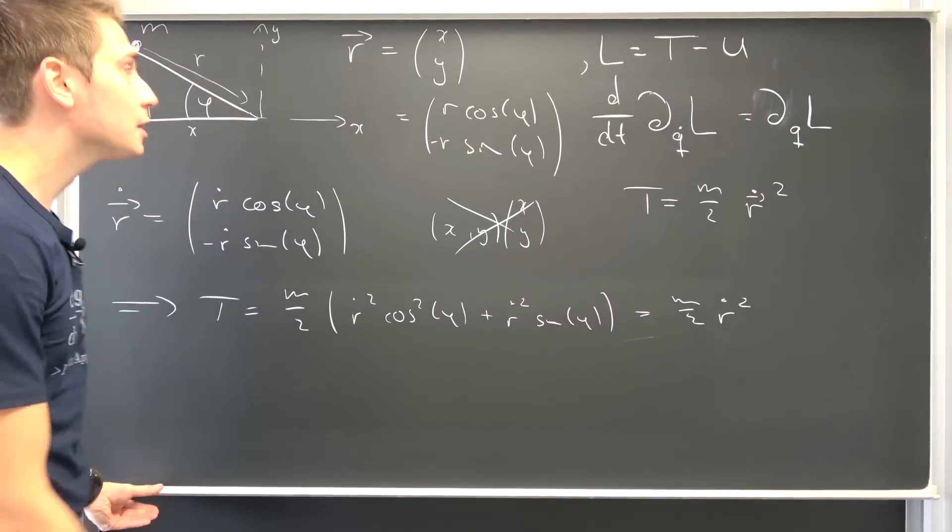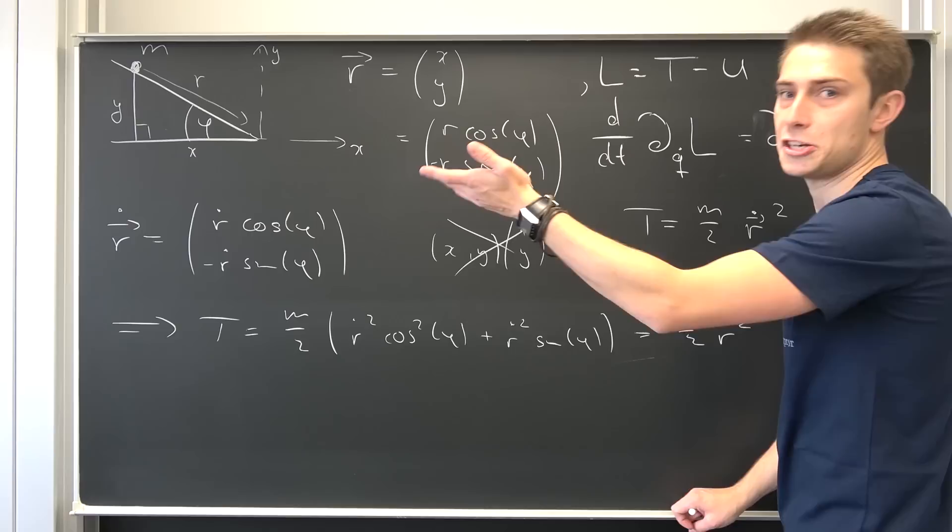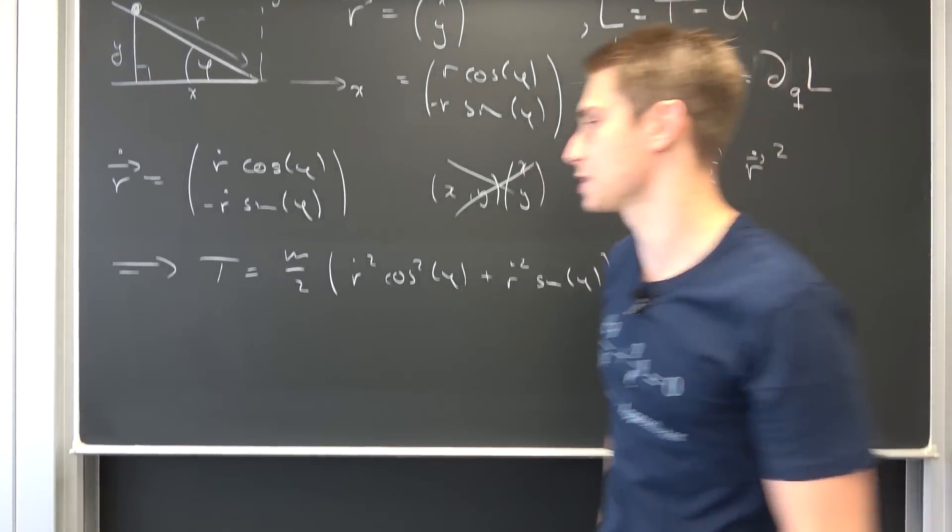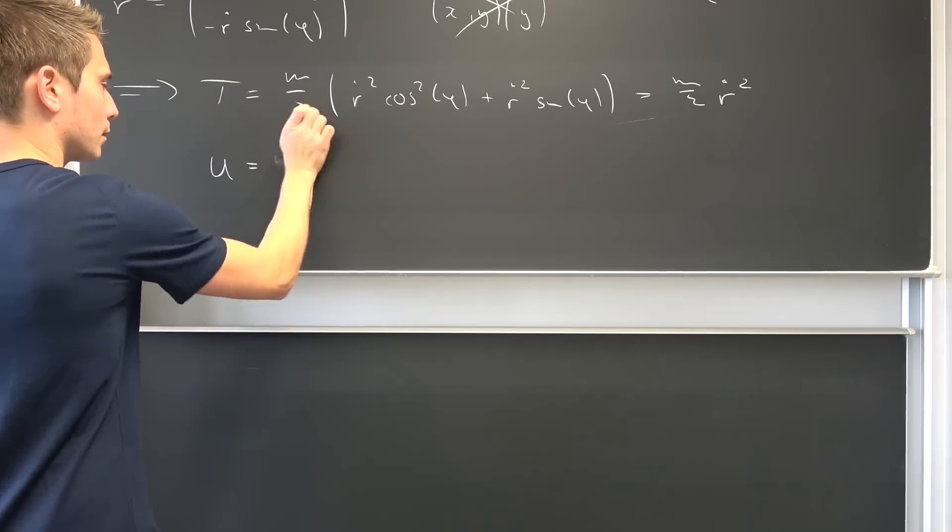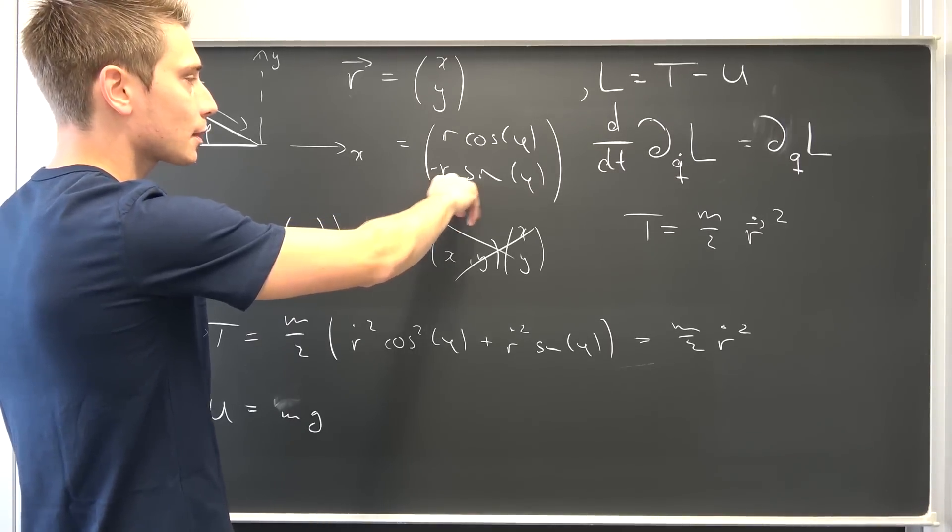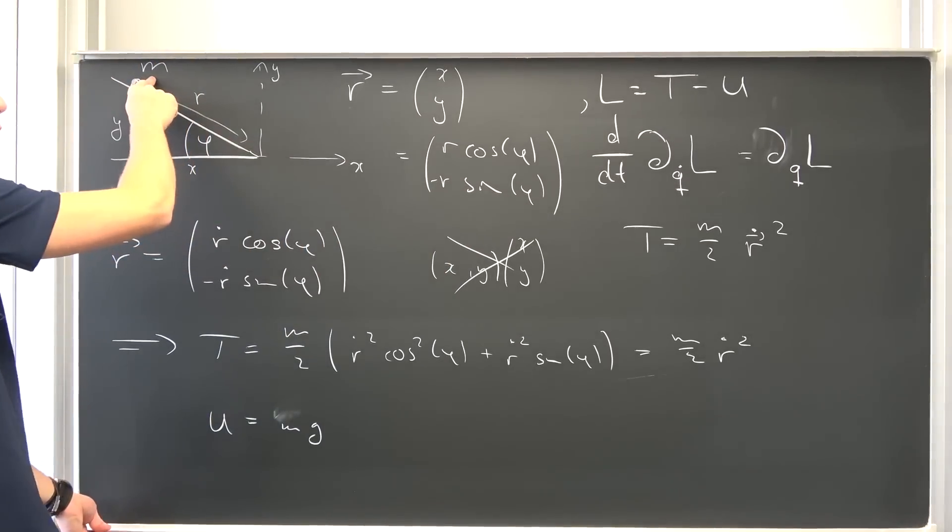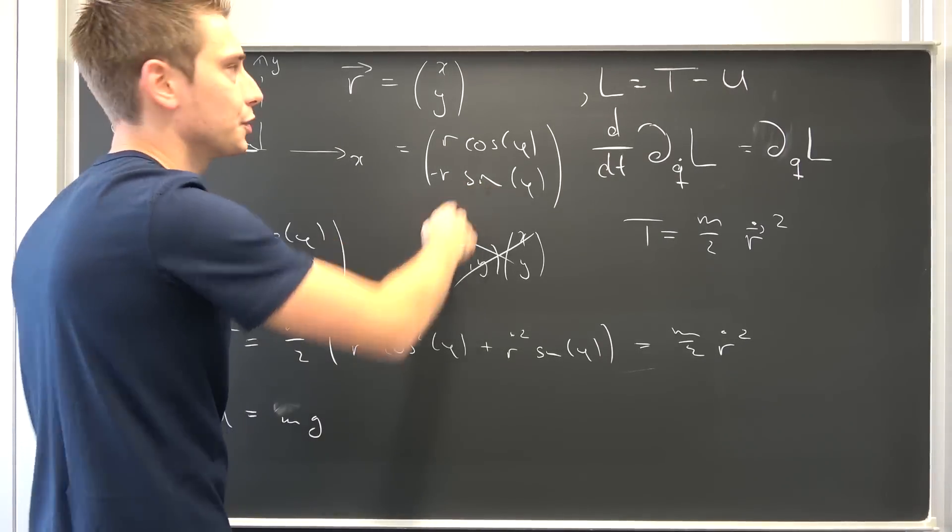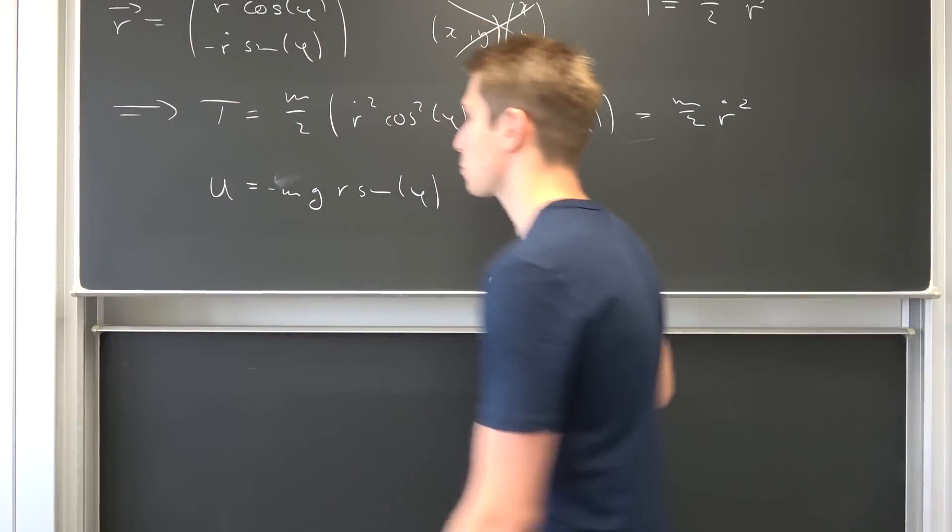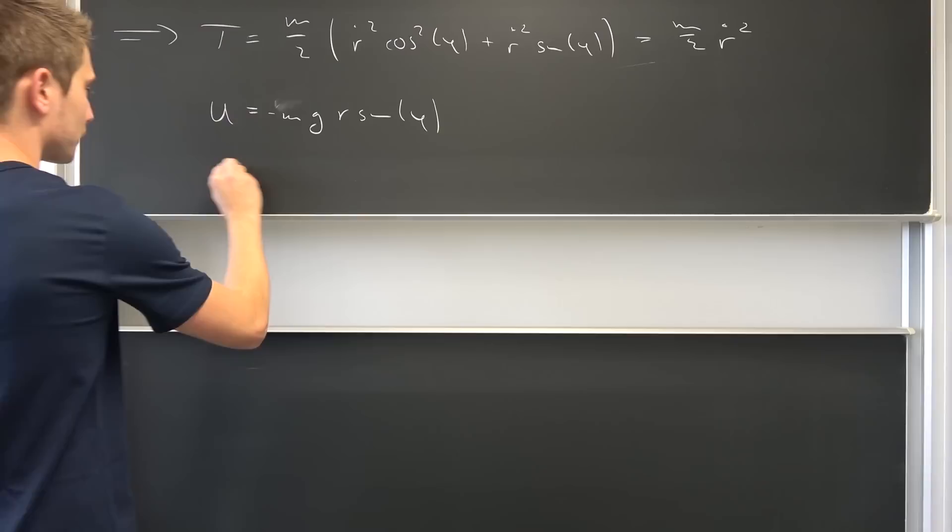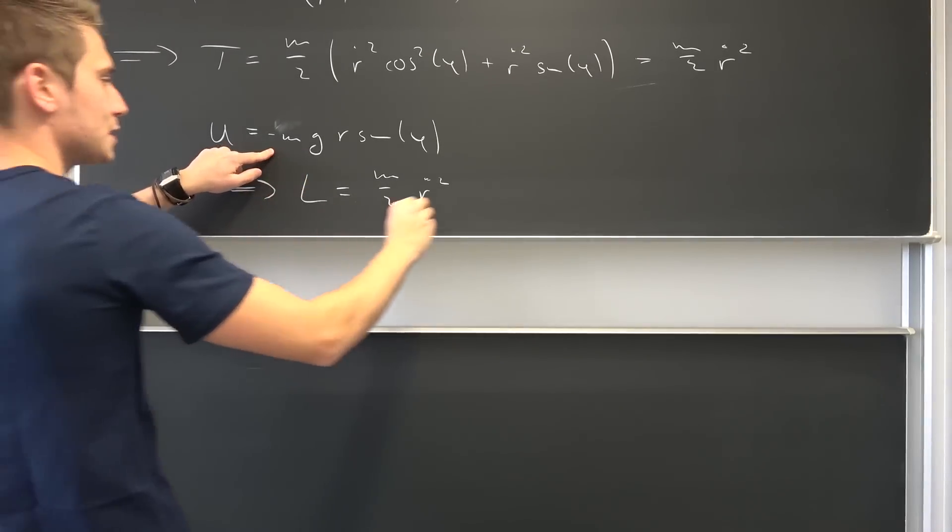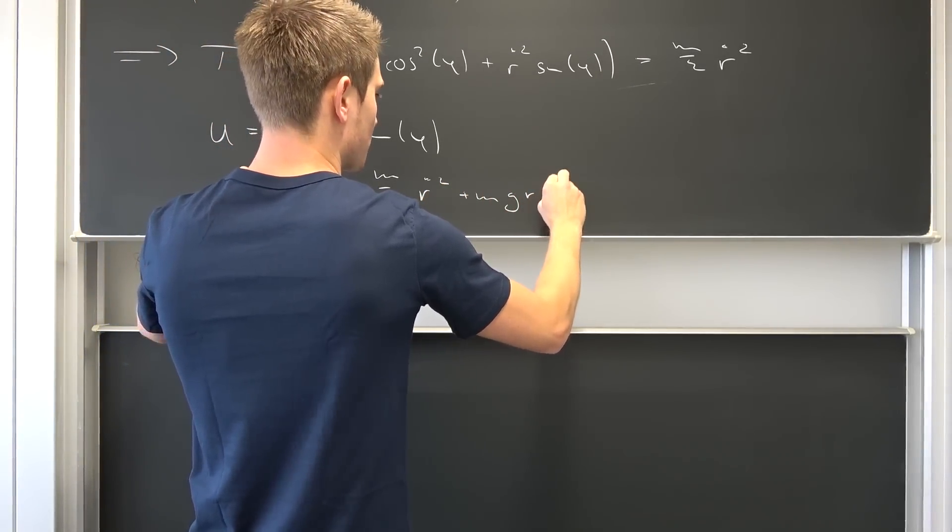Now we only have to deal with our potential. Our potential energy here is just a gravitational potential acting on our mass. Meaning it's defined by m times g times the height in the coordinate system. m times g times the height, and what is the height exactly? This is basically simply always our y-coordinate that we have right here. This is always the height, this y-coordinate in our coordinate system of our mass. So times r times the sine of phi. And with this we have actually found out our Lagrangian, which is thus nothing other than T minus U, so m over 2 r dot squared, and then positive m times g times r times the sine of phi.